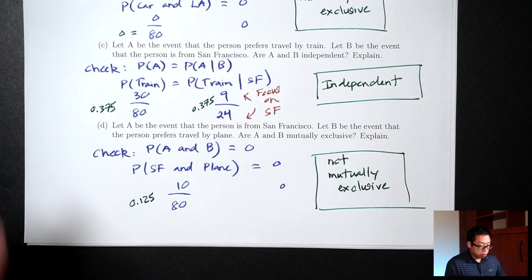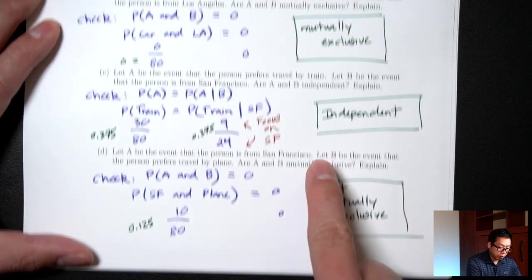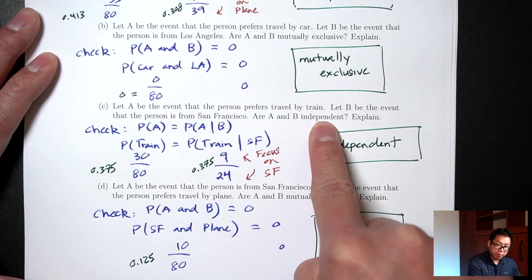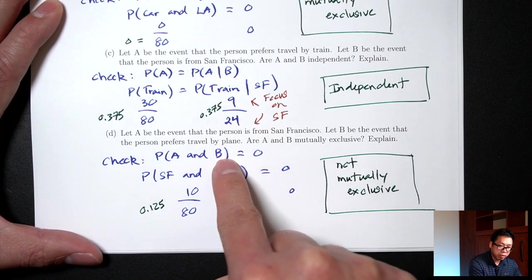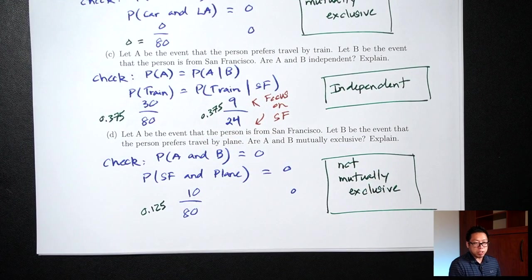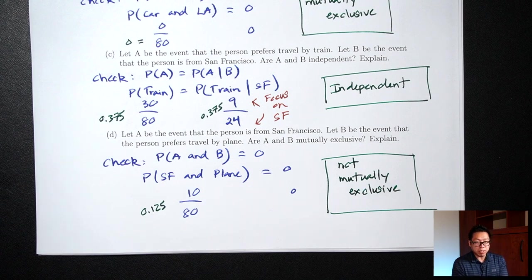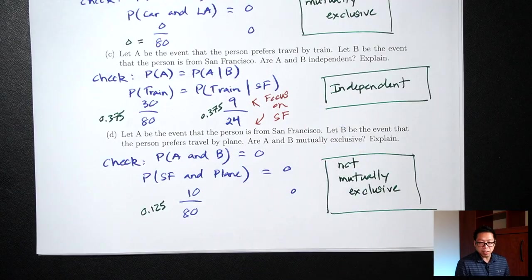Pay attention to whether the question is asking about mutually exclusive or independent — that tells you which equation to check. Once you figure out which equation to check, find the left side, find the right side, and check whether they are equal or not. If they are equal, the answer is yes; if they're not equal, the answer is no.